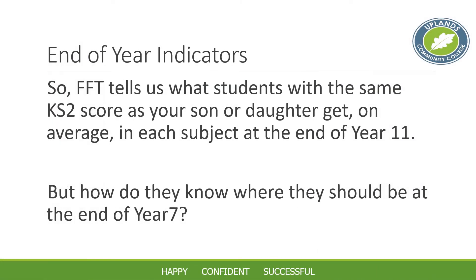FFT allows us to look at two pieces of information: where students were at the end of primary school, and where they should be by the end of Year 11 to make good progress. However, Year 11 is a long way off compared to a child's performance six weeks into Year 7. To deal with that gap, we set end-of-year targets — working back in stages from their Year 11 target to show where students should be at the end of each year: Year 7, 8, 9, and then an end of Key Stage target for Years 10 and 11.